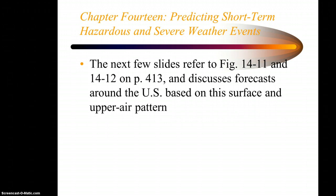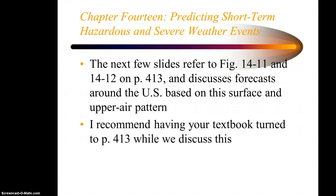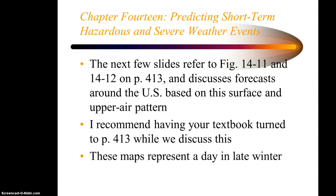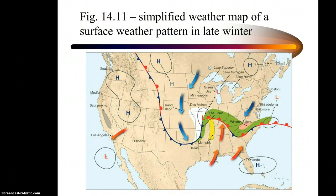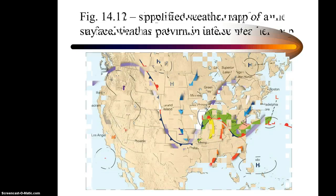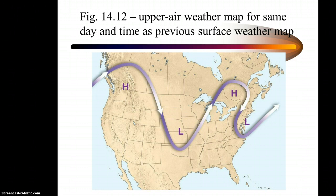The next few slides refer to Figures 14.11 and 14.12 on page 413. Using forecasts around the U.S. based on the surface and upper air pattern shown, I recommend you turn your textbook to page 413 while we discuss this. These maps represent a day in late winter. On the simplified surface map, green is rain, pink is mixed precipitation or freezing rain, white is snow, and areas void of color shading are no precipitation. The upper air pattern shows a big high-pressure ridge over the west coast, a low-pressure trough in the central U.S., a low-pressure trough in New England, and an upper-level high over the Great Lakes.